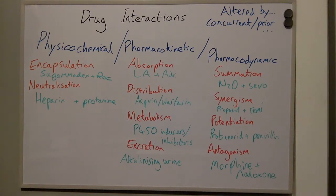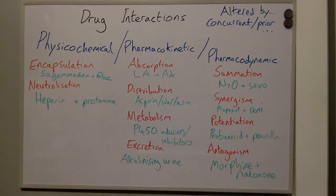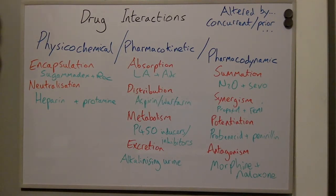Metabolism — for example, the P450 enzyme system. We have enzyme inducers, which include phenytoin, carbamazepine, rifampicin, and barbiturates. And enzyme inhibitors, which include omeprazole and cimetidine.